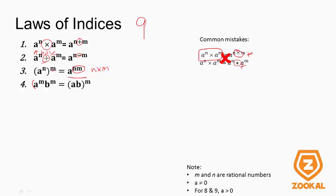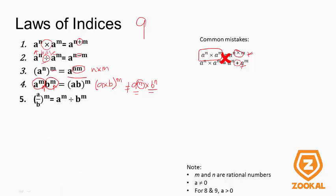Law 4 involves different bases — one is A and one is B — but they have the same power M. When you meet such cases, you multiply A times B and apply the common power M to the bracket. Be very careful about what the base is — what A and B are — and what the power is.